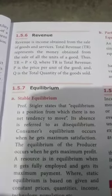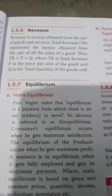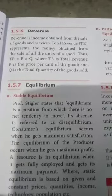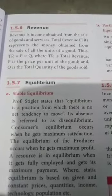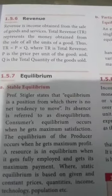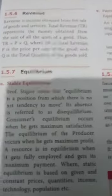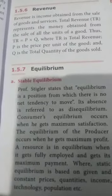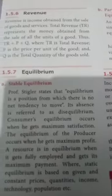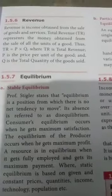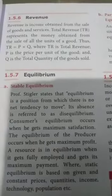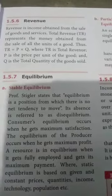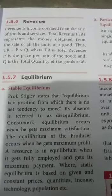TR equals P into Q. That is the total revenue. P is the price per unit of the goods, and Q is the total quantity of the goods and services sold.